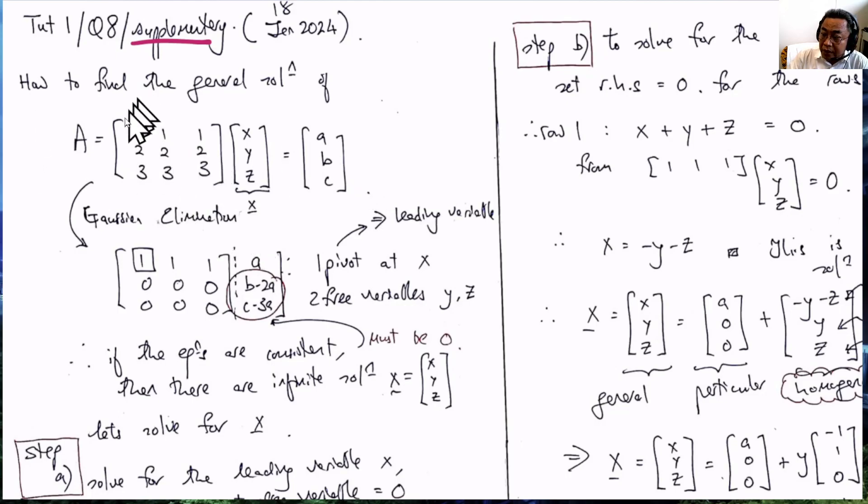In Question 8, we are given this A and this unknown vector X, and we are given ABC as the vector B.